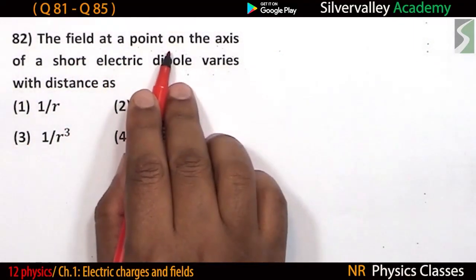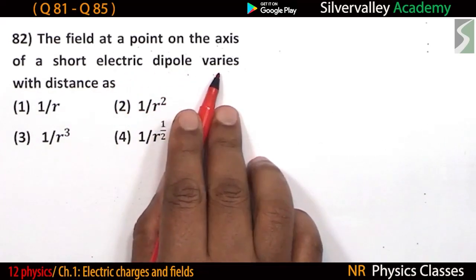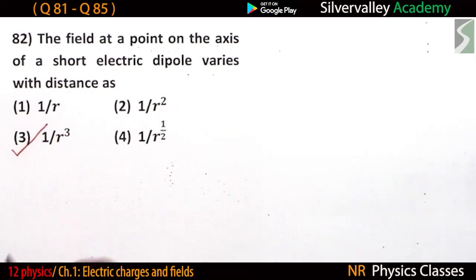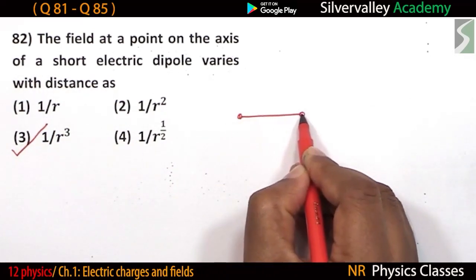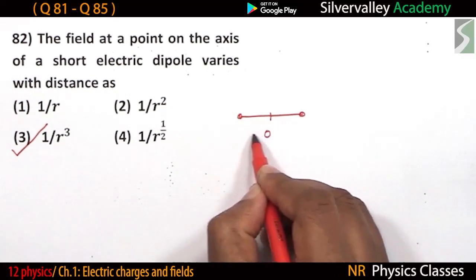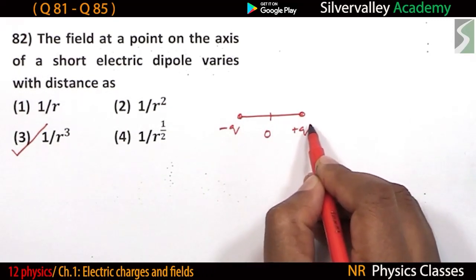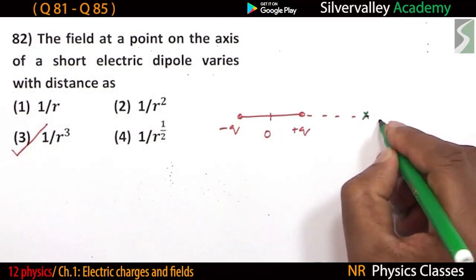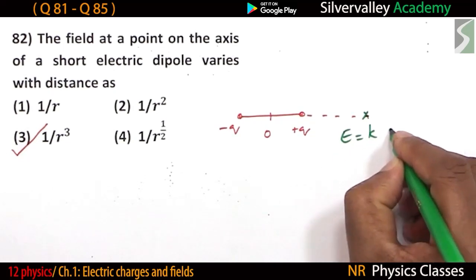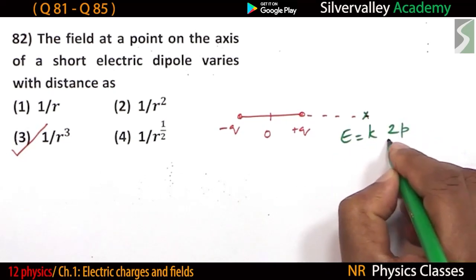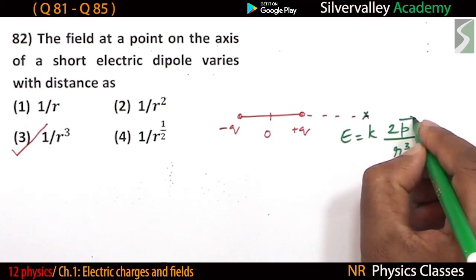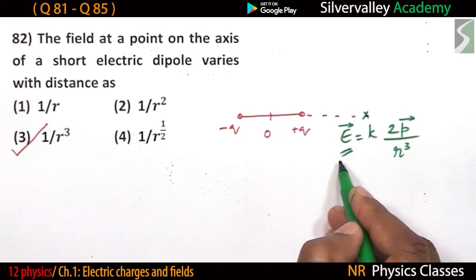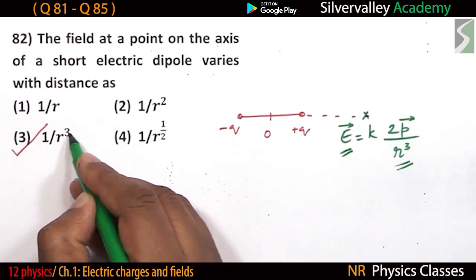The electric field at a point on the axis of a short electric dipole varies with distance as 1 divided by R cubed. For a dipole with charges minus Q and plus Q at its center, the electric field on the axis is E equals a constant times 2P divided by R cubed. So the field is proportional to 1 over R cubed.